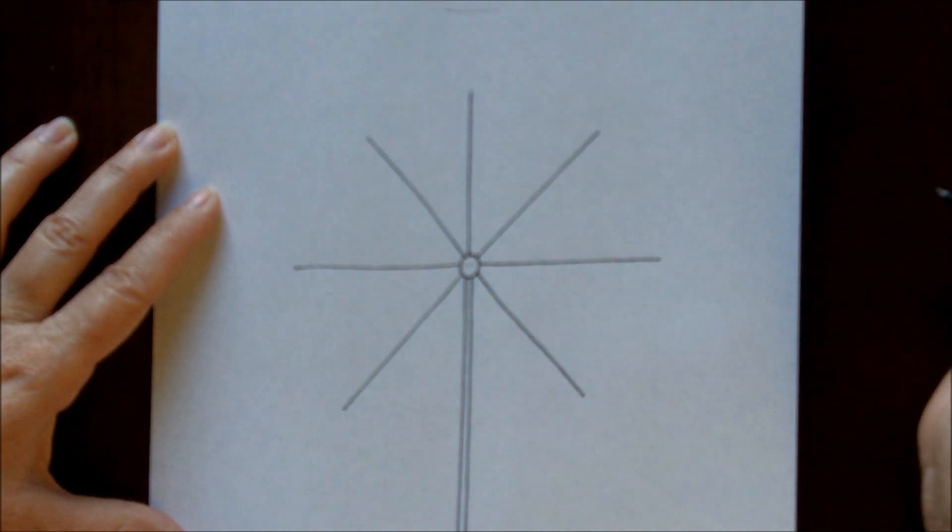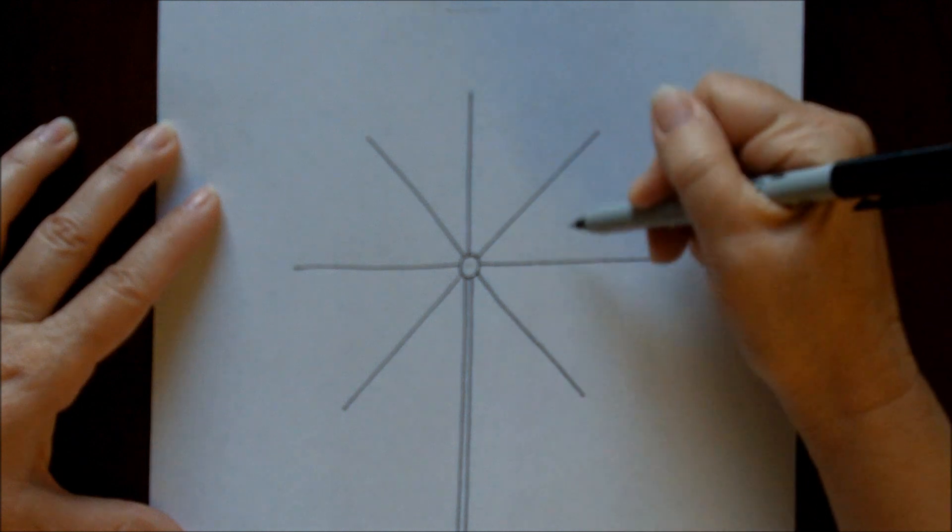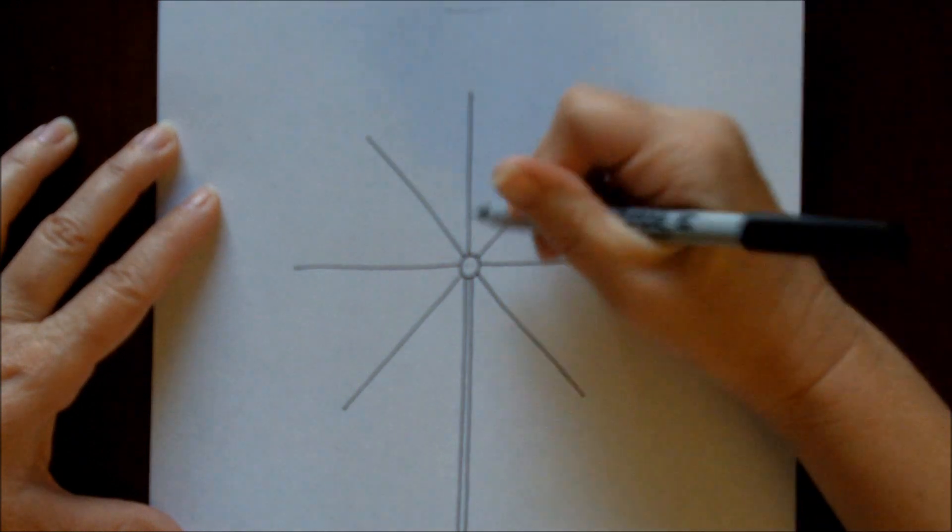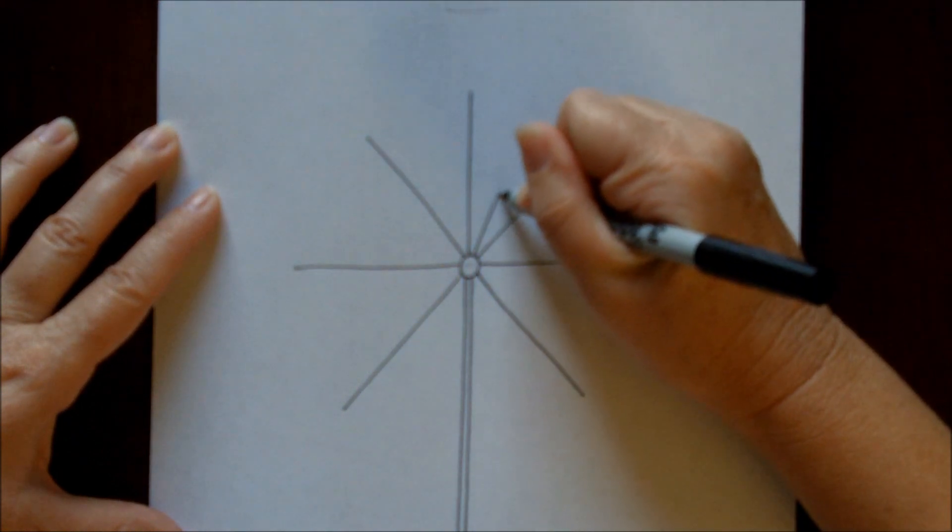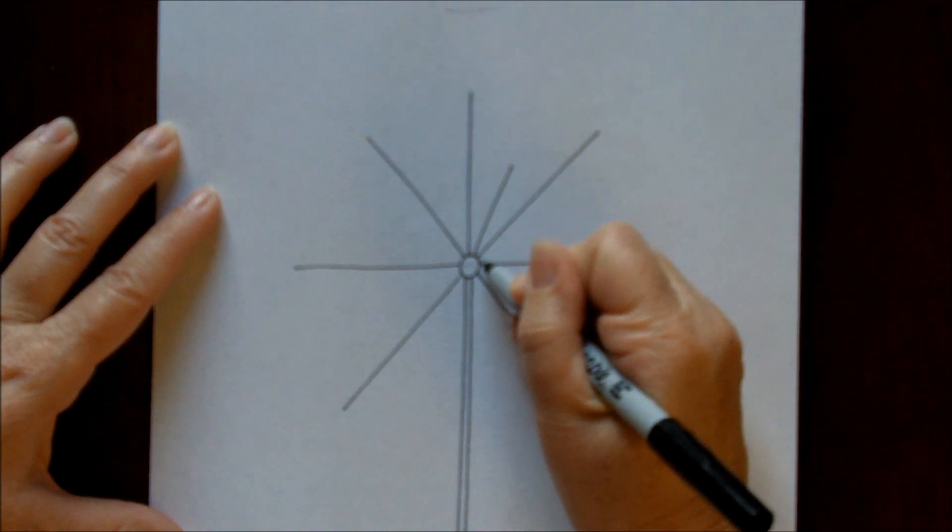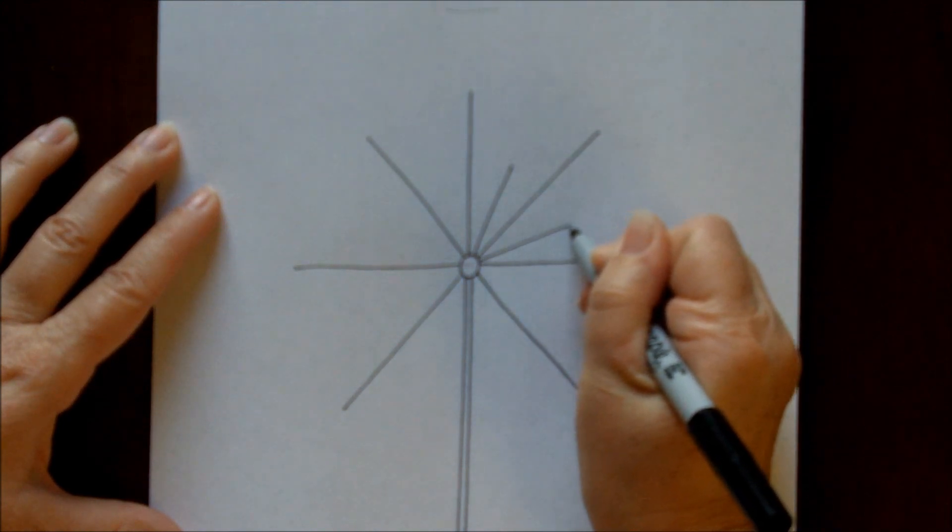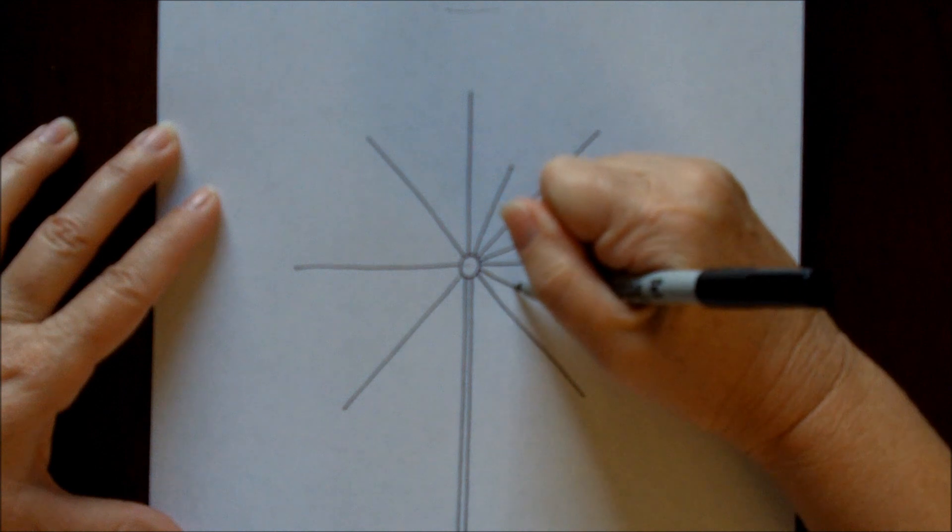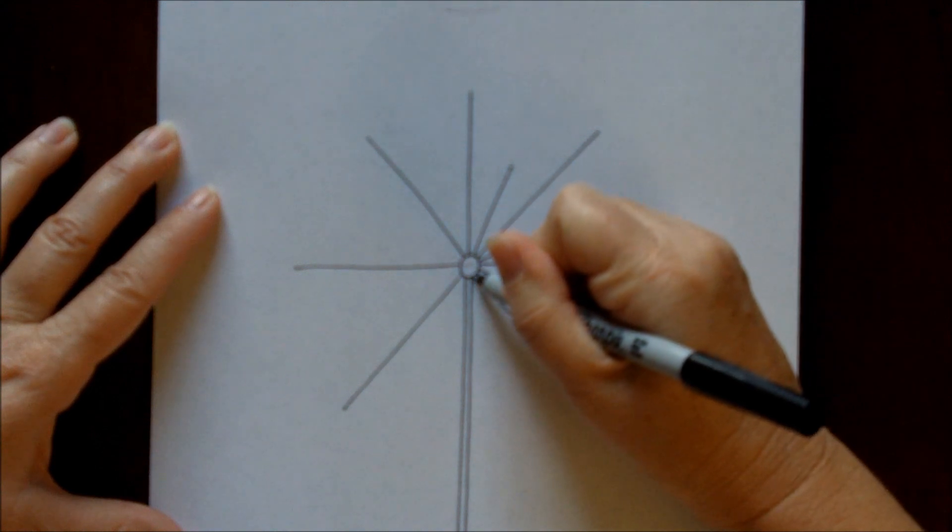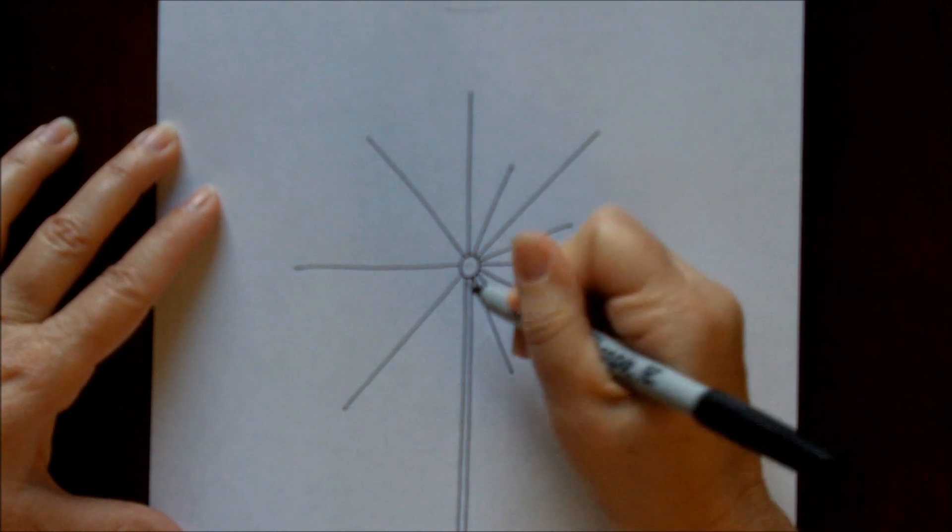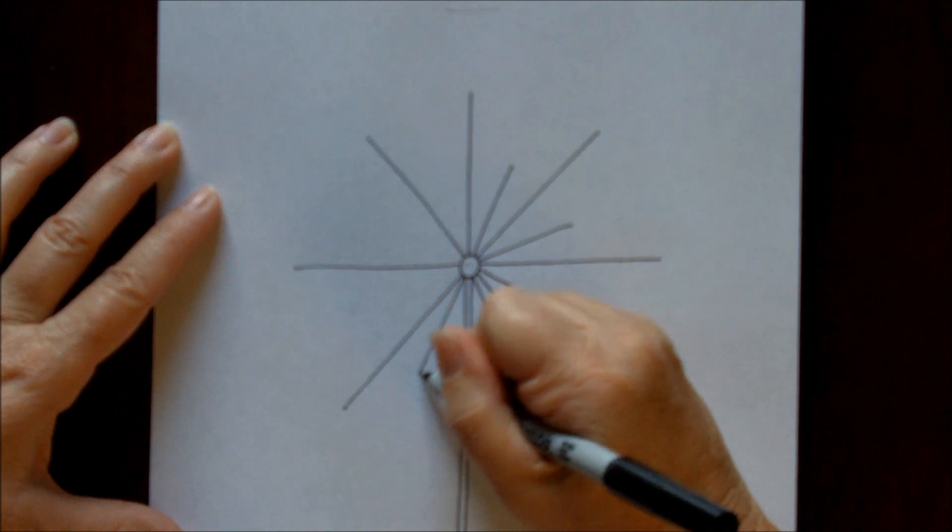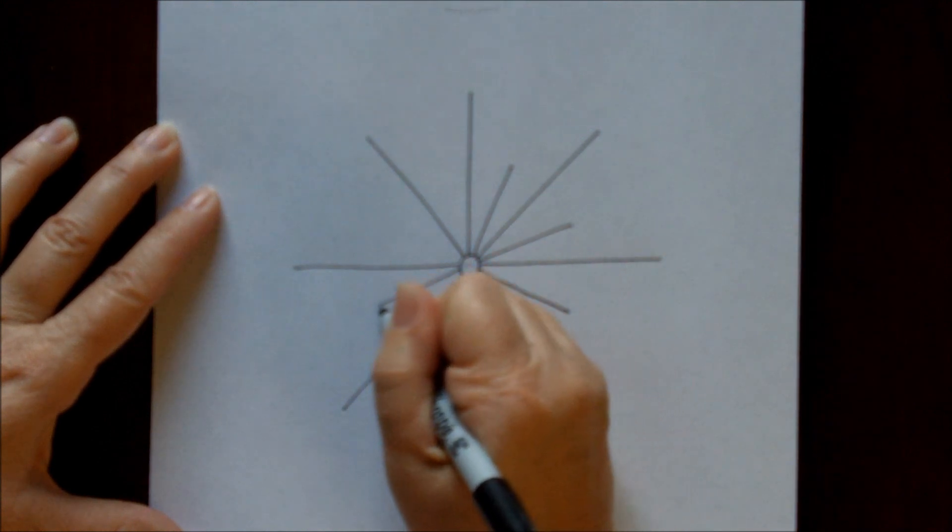Now between each of these lines we're going to make a shorter line. So basically a lot of this is a series of lines coming out. The effect is really cool though, so we just keep going with our shorter lines coming out from the center.